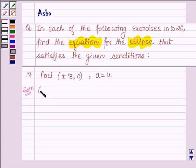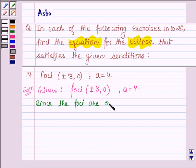So we are given here that foci is (±3, 0) and the value of a is equal to 4. Since the y-coordinate of foci is 0, therefore the foci are on the x-axis.